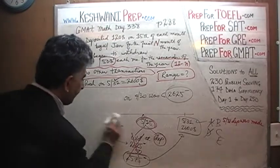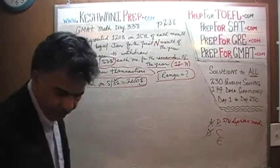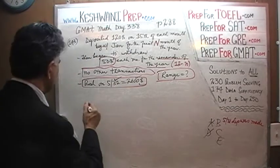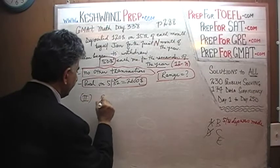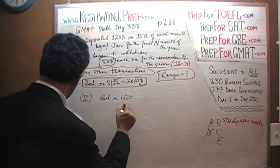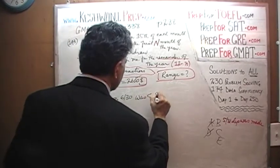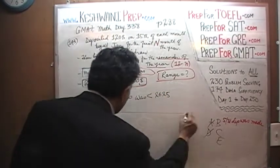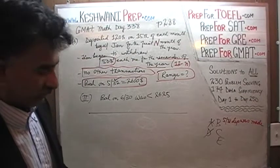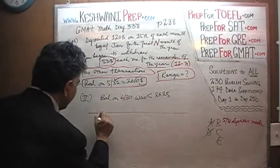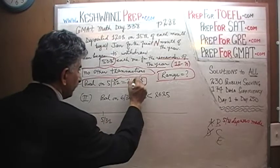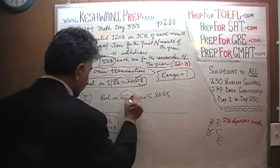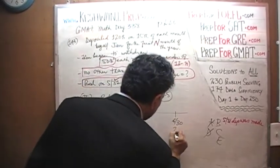In the second statement, they tell us that the balance on June 30th was less than $2,625. On May 31st we know for a fact that we have $2,600 — that is given to us. We also know now that on June 30th we have less than $2,625.